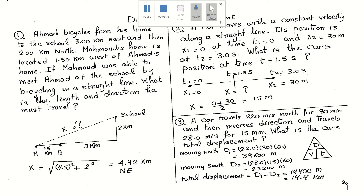Now let's look at the next problem. A car moves with constant velocity along a straight line. Its position is x1 equals 0 at time t1 equals 0, and x2 equals 30 meters at t2 equals 3 seconds. What is the car's position at time t equals 1.5 seconds?